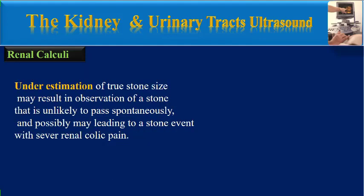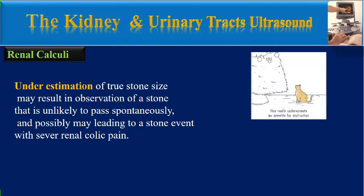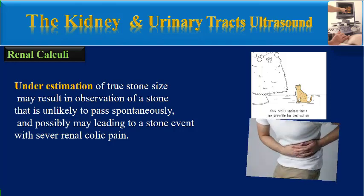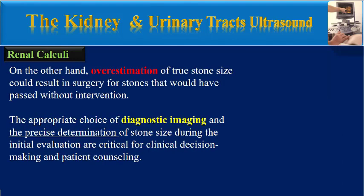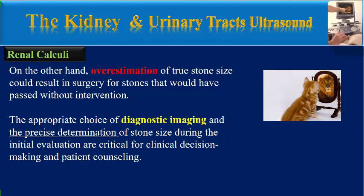Underestimation of true stone size may result in observation of a stone that is unlikely to pass spontaneously and may lead to a stone event with severe renal colic pain. On the other hand, overestimation of true stone size could result in surgery for stones that would have passed without intervention. The appropriate choice of diagnostic imaging and the precise determination of stone size during the initial evaluation are critical for clinical decision-making and patient counseling.